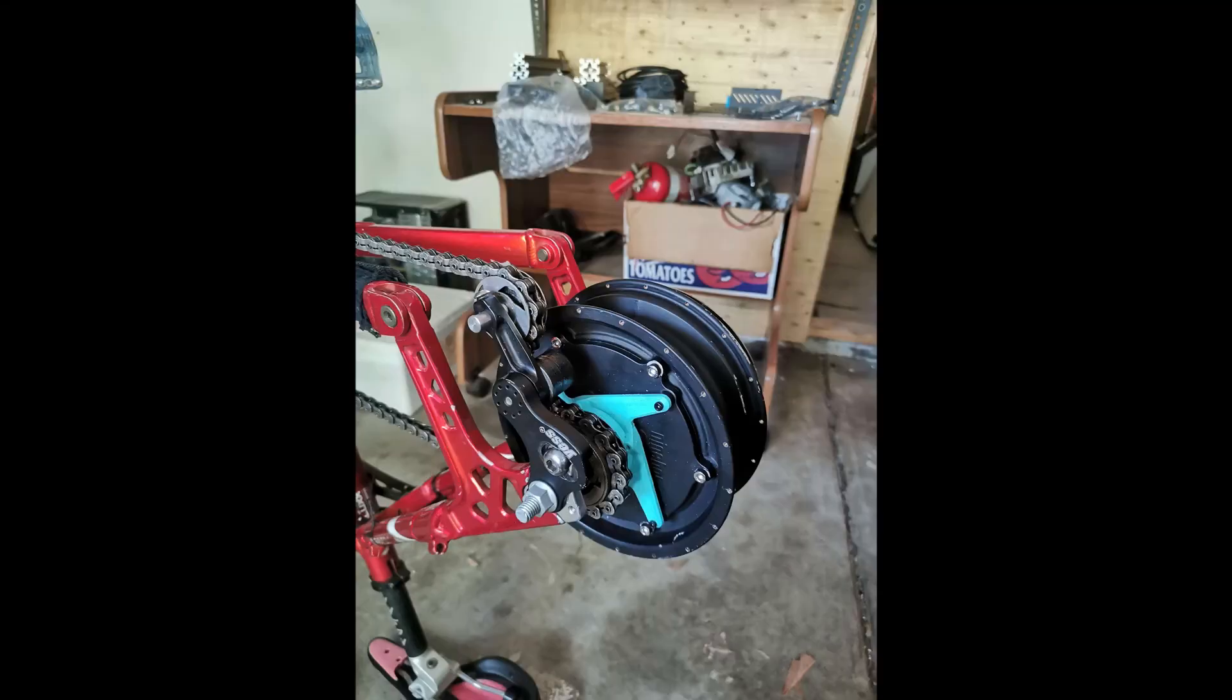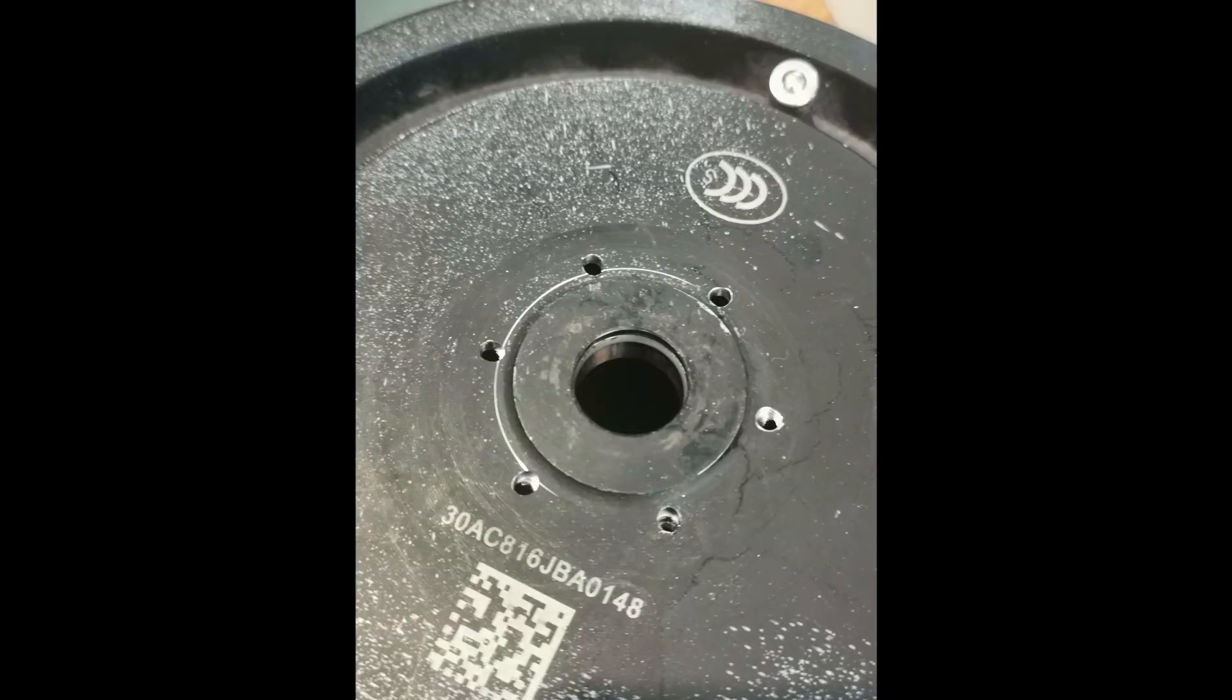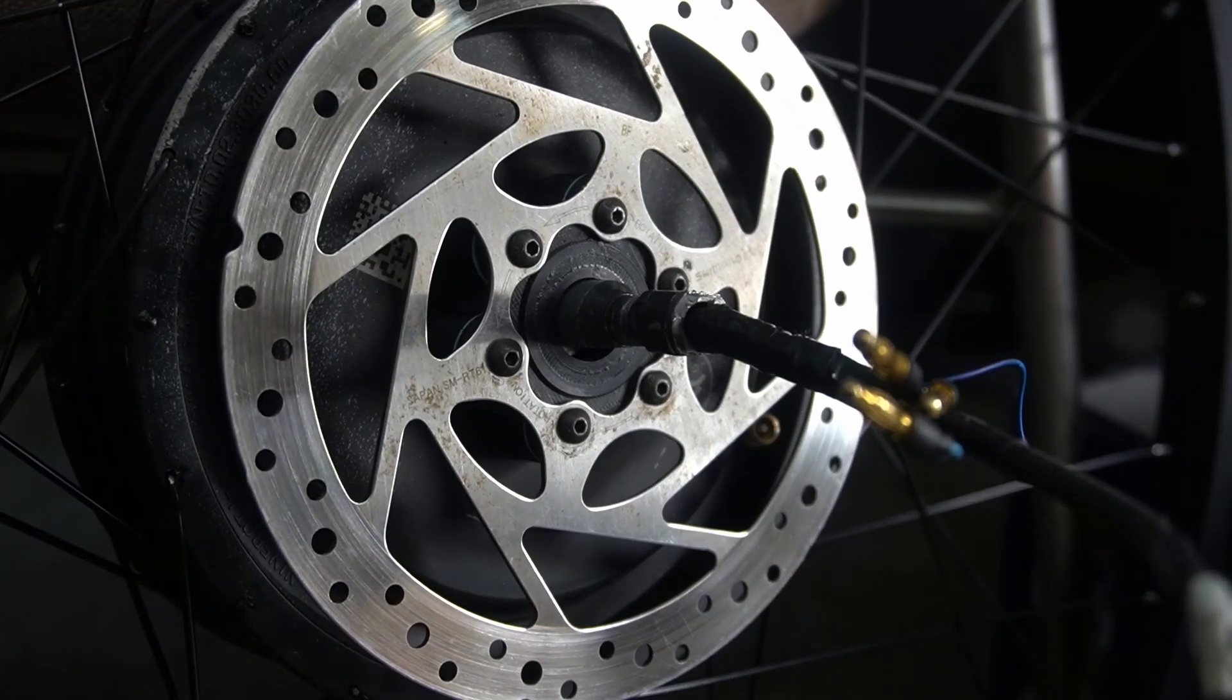To make the hub motor compatible with a bike, I had to add 3D printed couplers to attach the freewheel and also cut appropriate mounting holes to bolt on the brake disc.